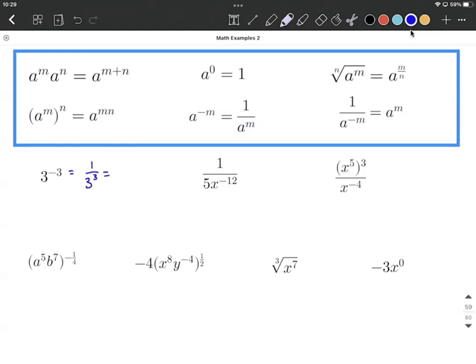So this would be the same thing as 1 over 3 to the positive third power. Next, we can simplify this a little bit further. Instead of 3 to the third power, that means 3 copies of 3 multiplied together, which works out to be 27. So 1/27 is equivalent to 3 to the negative third.